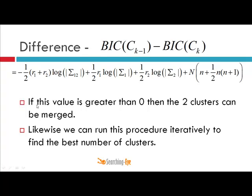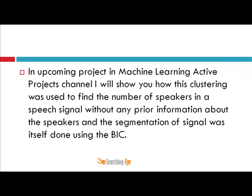You can verify this on paper. If this difference value is greater than 0, then the two clusters can be merged. You can run this procedure repeatedly to find the best number of clusters. You can also find at level K which two clusters are the most probable candidates for merging. In an upcoming project on the machine learning active project channel, I will show how this clustering was used to find the number of speakers in a speech signal without any prior information, with segmentation done using BIC.